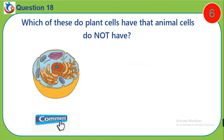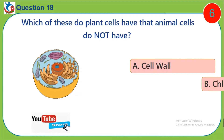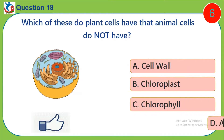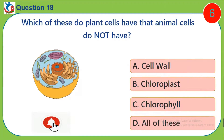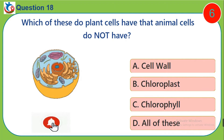Question 18. Which of these do plant cells have that animal cells do not have? A. Cell wall. B. Chloroplasts. C. Chlorophyll. D. All of these.